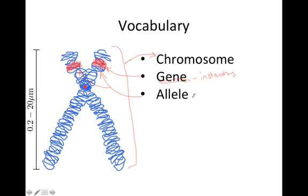And when we talk about the version of those instructions, then we use the word allele to compare like, oh, this side versus this side. So the gene is the instructions, and when we use the word allele, we're talking about which version of the instructions.